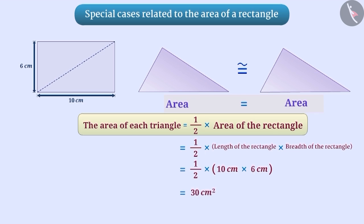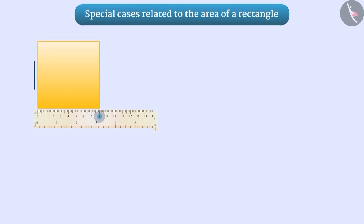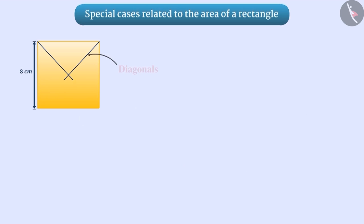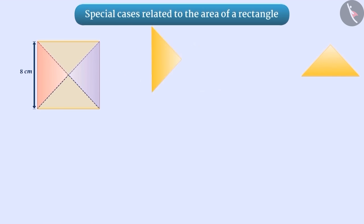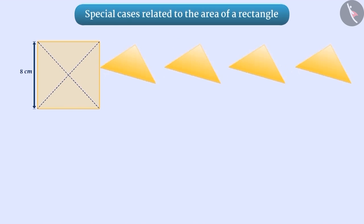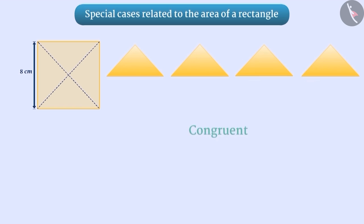Now take a square piece of paper of side 8 cm. Draw both its diagonals and divide it into four parts. You will get four triangles.